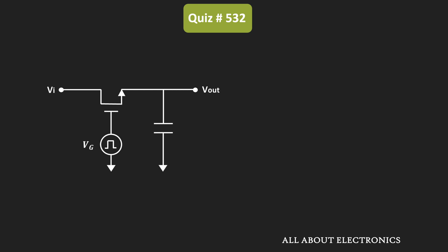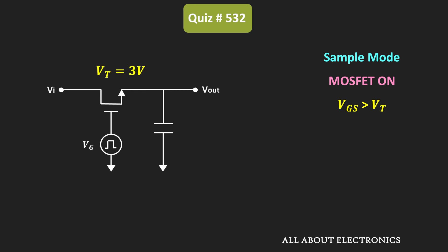Whenever the circuit operates in the sampling mode, the MOSFET will remain in the ON condition. The MOSFET remains ON when the gate-to-source voltage is more than the threshold voltage. We have been given that the threshold voltage for the MOSFET is equal to 3V.